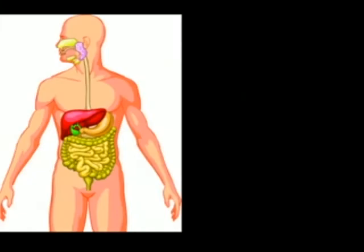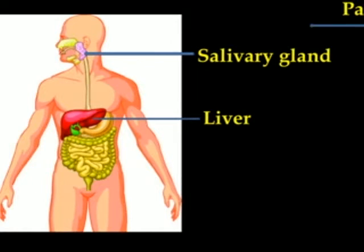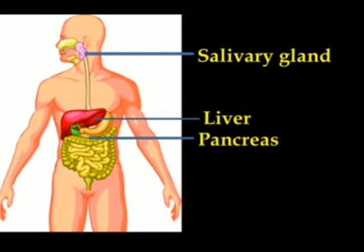The glands associated with the digestive system are: salivary glands — there are three pairs of salivary glands in our mouth — liver, which is the largest gland, situated in the upper part of the abdomen on the right side, and the pancreas, which is a yellowish gland situated just below the stomach.